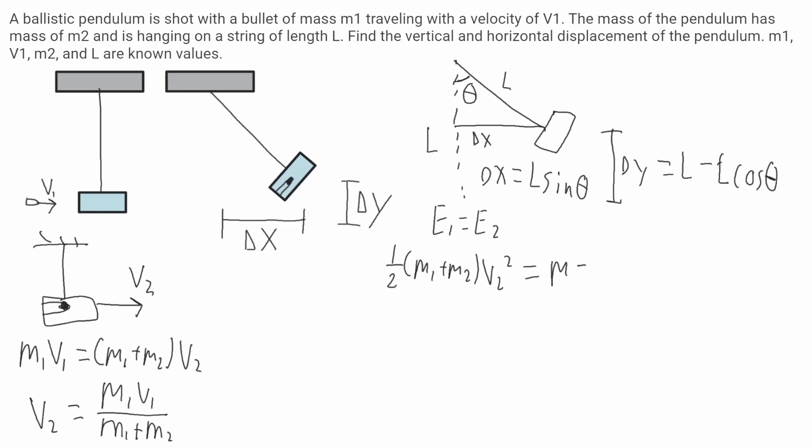Because briefly for a moment its velocity will be zero, so it'll be m1 plus m2 times g, and then the height will be delta y. Now I'm going to plug in this v2 term in for this v2.